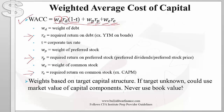If they do not give you this information, they will give you all the information needed to compute these required returns. For debt, we usually use the yield to maturity on bonds the company expects to issue in the future or on bonds recently issued. The required return on preferred shares is computed by dividing the amount of preferred dividends by the price of the preferred share. The required return on equity is probably the most complicated to compute, but we use different models such as the capital asset pricing model.